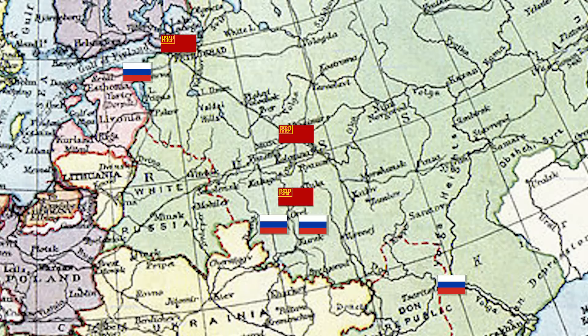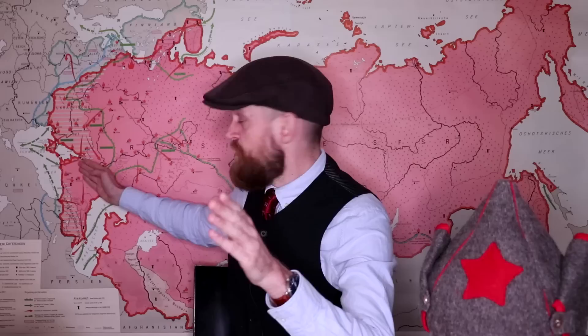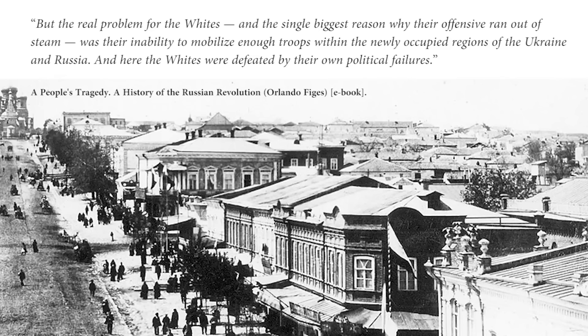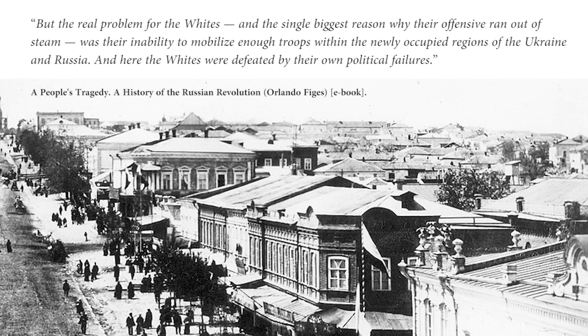The Bolsheviks were in panic because around that time, the northwestern forces of General Yudenich advanced from Estonia towards Petrograd. For once, the Whites were able to coordinate their attacks, and for a few crucial days in October it seemed this would be enough to defeat the Reds. Yet it did not happen. Denikin's forces had severely overstretched themselves. In the rear they were plagued by Ukrainian nationalists, Makhnovist anarchist partisans, and Chechen rebels from the south. The Cossacks refused to leave their homeland, as the Whites had not promised them autonomy for the Kuban. But the real problem — the single biggest reason why their offensive ran out of steam — was their inability to mobilize enough troops within the newly occupied regions of Ukraine and Russia.